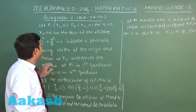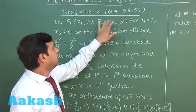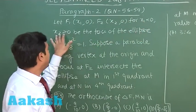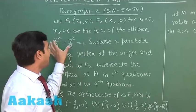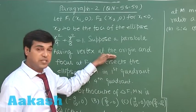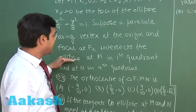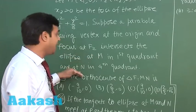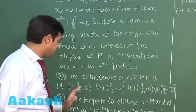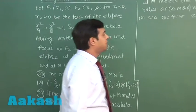Let us talk about the second paragraph for question 53-54. F1, F2, where x1 less than 0 and x2 greater than 0, be the foci of given ellipse. A parabola having vertex at origin and focus at F2 intersects the ellipse at M and N in first and fourth quadrant respectively. Two questions are given based on the same. So let us start with the geometry part.